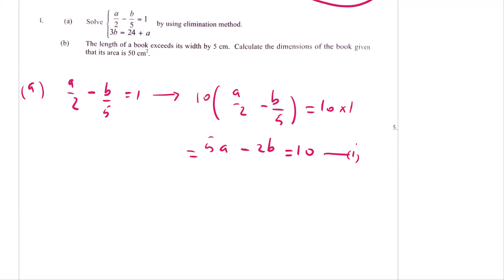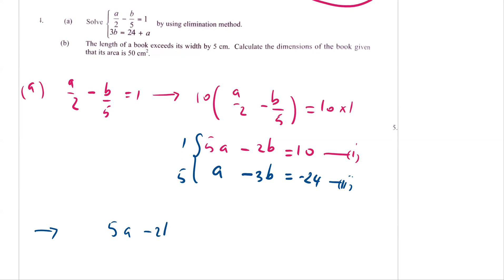Equation number 2, rearranged, gives A − 3B = −24. To solve by elimination, I multiply equation 1 by 5 and equation 2 by 1, so we now have: 5A − 2B = 10, and 5A − 15B = −120.